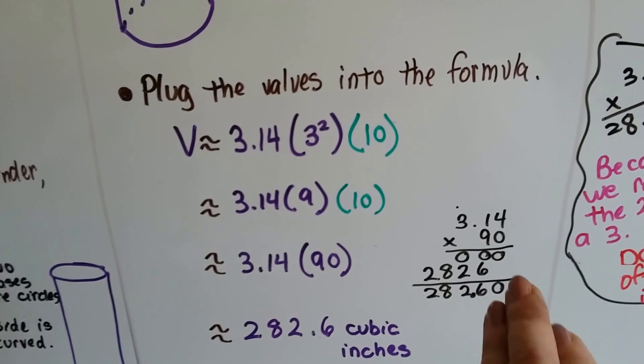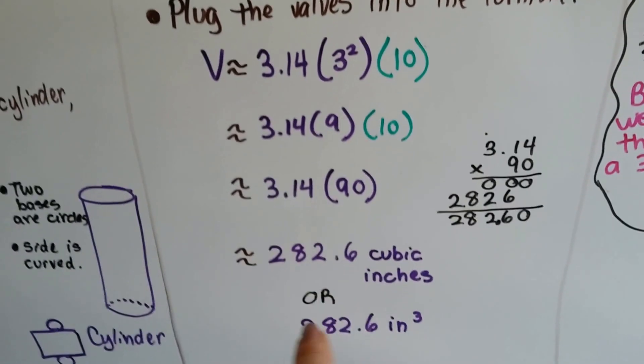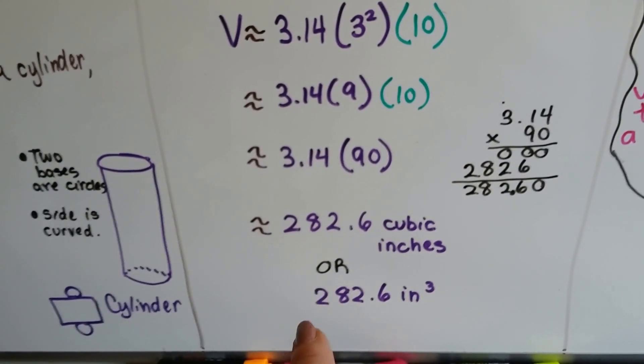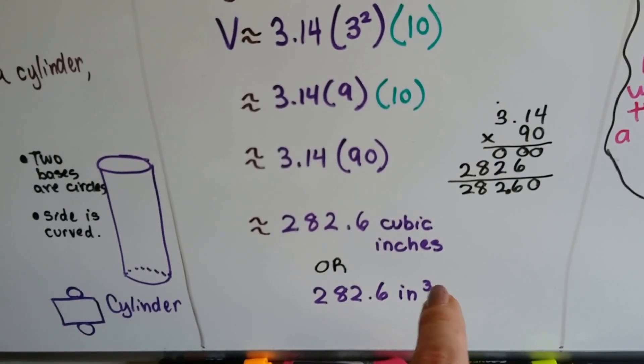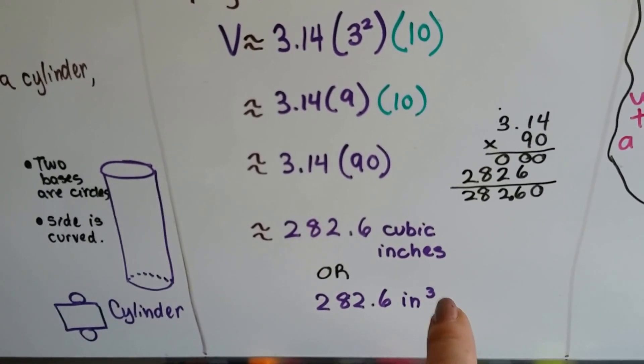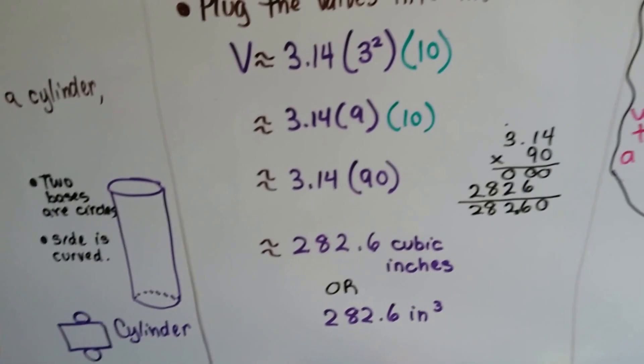Now because we're rounding to the nearest tenth, we don't put that zero on there. So we just have 282.6. And we have to remember that it's cubic inches. So to write it that way, we put 282.6 inches with a little 3 exponent. That means cubed. Because there's three measures. Length, width, and height in that cubic inch. So we have inches cubed.